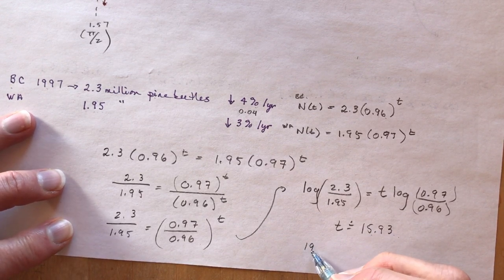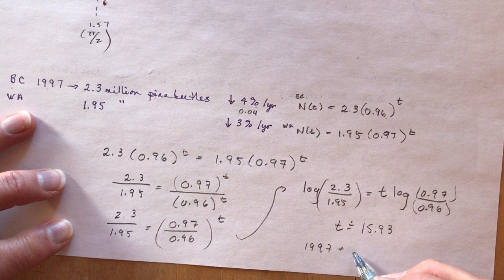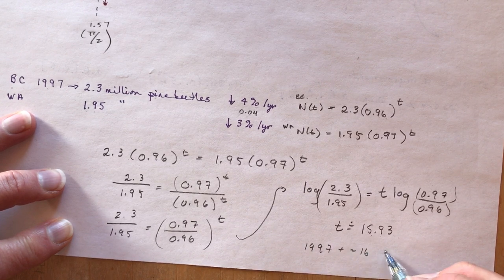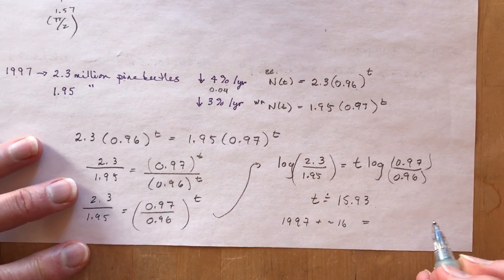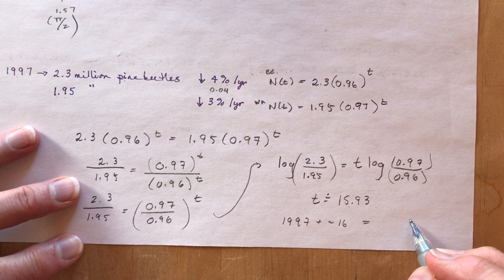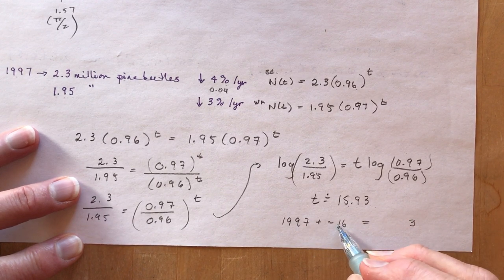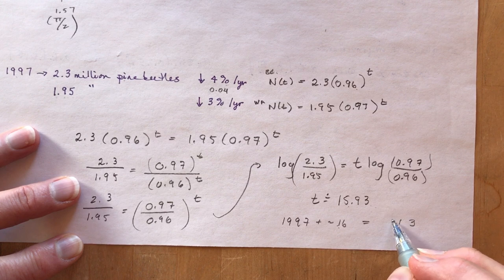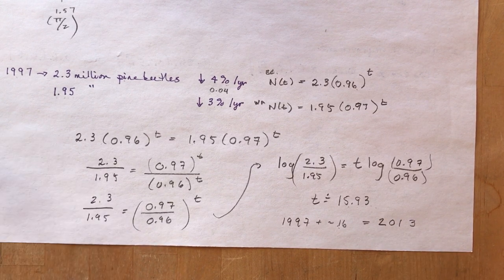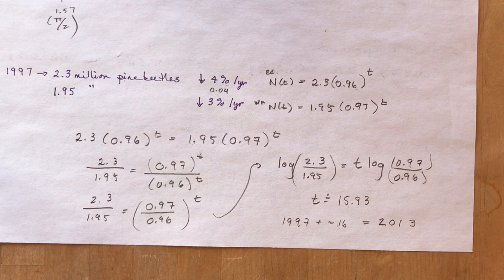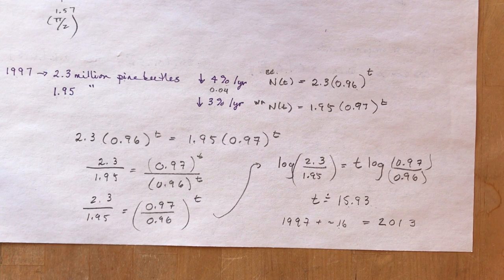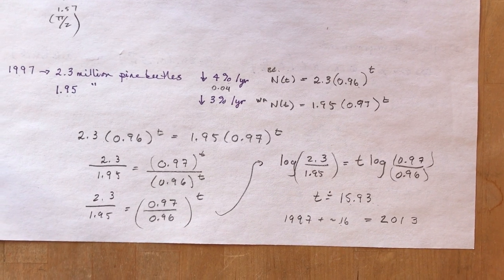So they'll be approximately equal about 16 years after 1997, which is 2013. That's already passed — we're almost at 2020 as this is recorded. That's section 9.6 — only one more section and then exam review.